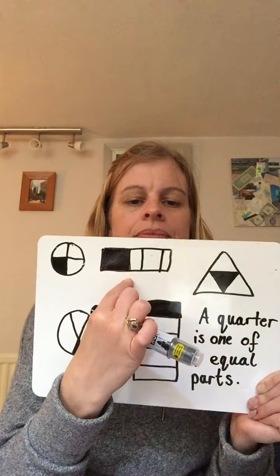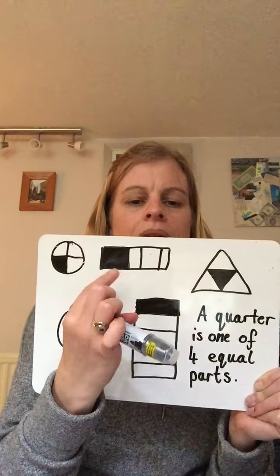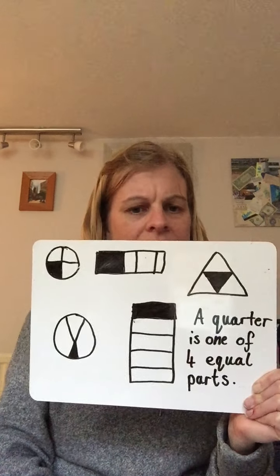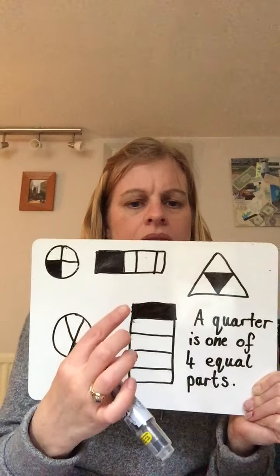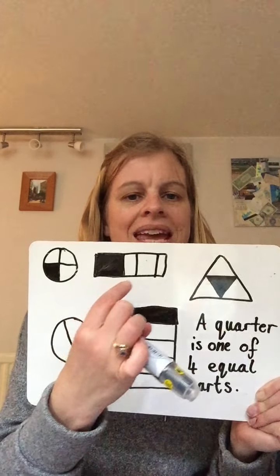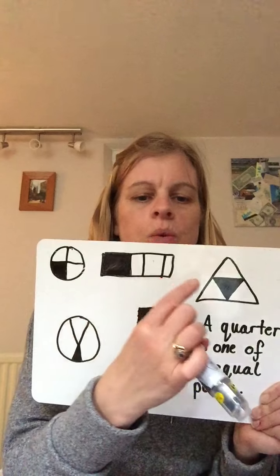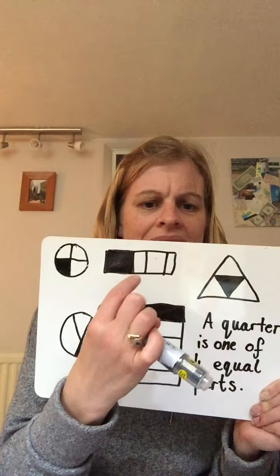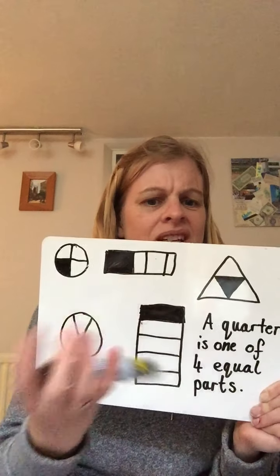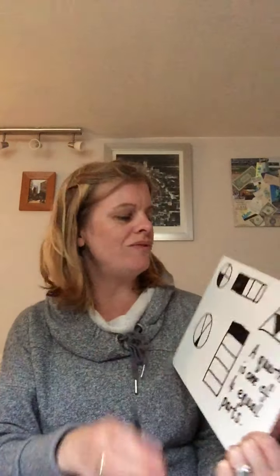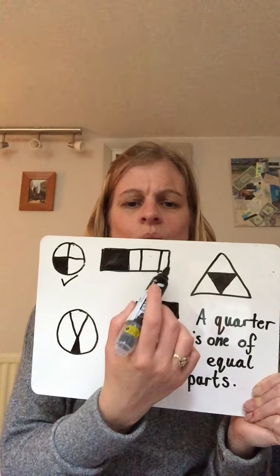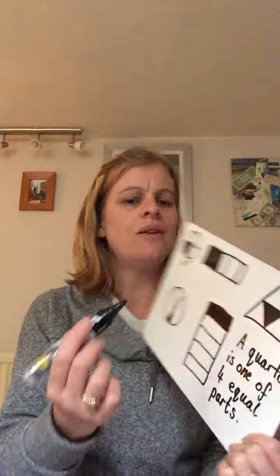Let's look at this one. I'm looking for four parts — one, two, three, four. So I think maybe it is a quarter because it's four parts. Oh, hold on. Are they equal parts? Well, look, that one's really tiny. That's sort of bigger. That's small again, and this one's really big. So that can't be a quarter. We've decided that the first one is a quarter, but this one — are the parts equal? No, they're not. So that is not a quarter.